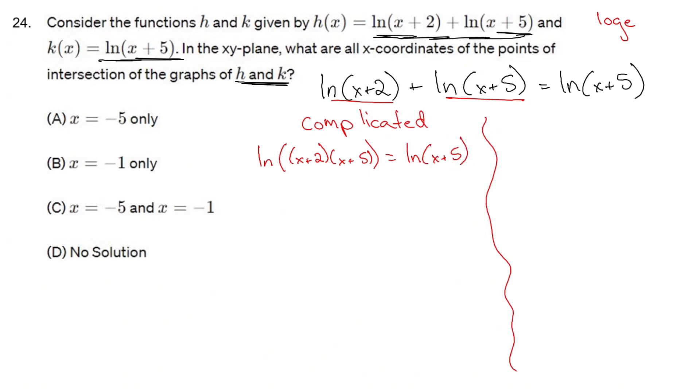If you have an ln on the left and a single ln on the right, if you just take e of both sides, all the ln's cancel out, and now you're left with x plus 2 times x plus 5 equals x plus 5.